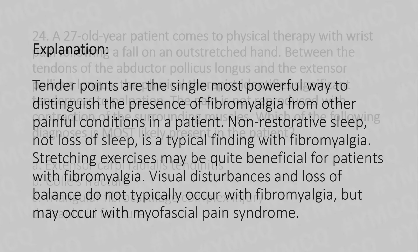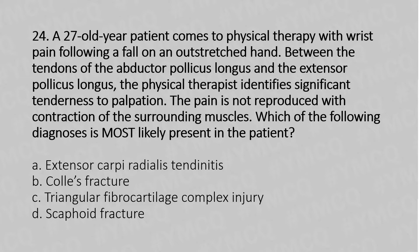Now let's move to our 24th question. A 27-year-old patient comes to physical therapy with wrist pain following a fall on the outstretched hand. There is significant tenderness to palpation between the tendon of abductor pollicis longus and extensor pollicis longus. The pain is not reproduced with contraction of the surrounding muscles. Which of the following diagnoses is most likely present in the patient?